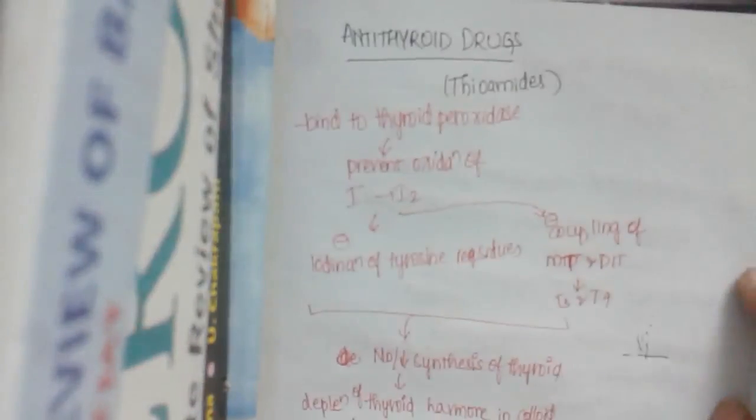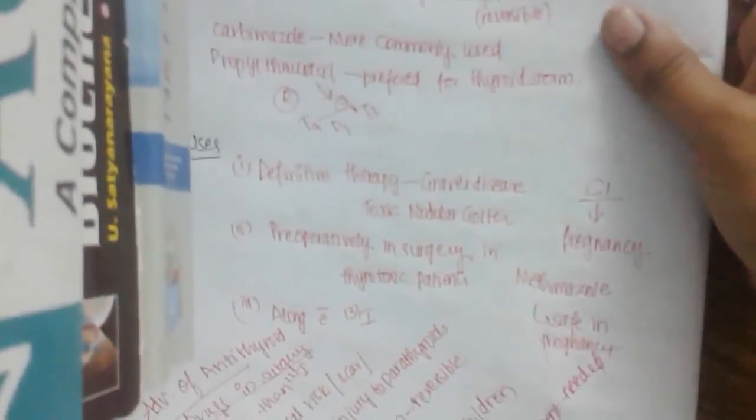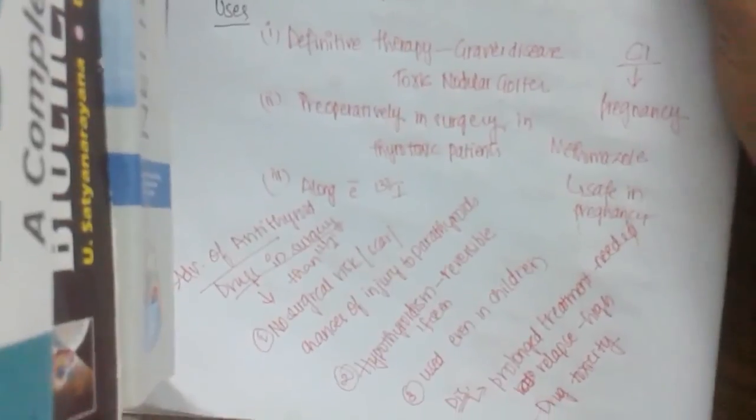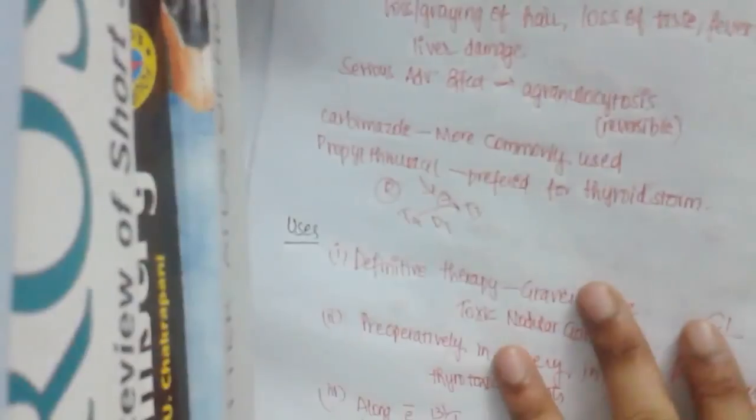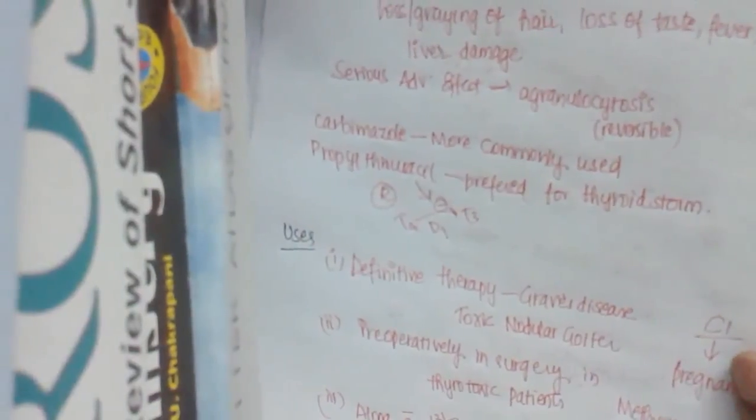So in this class we have dealt with antithyroid drugs — covering their mechanism of action, pharmacokinetics, side effects, and uses with advantages and disadvantages. In our next class we would deal with iodides and iodine. Okay, bye.